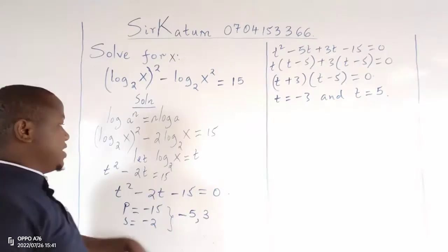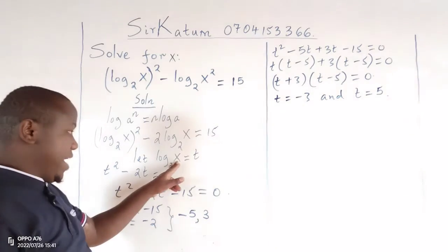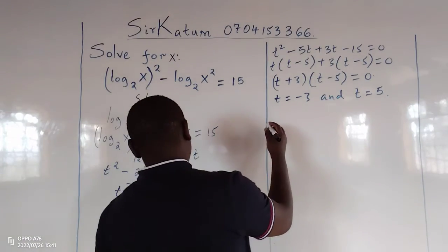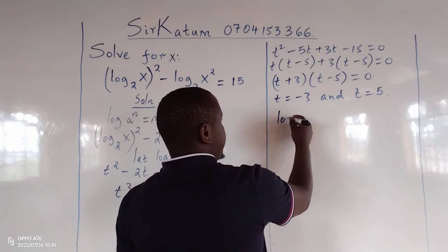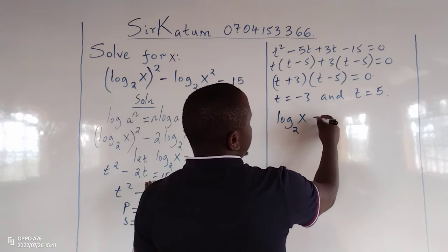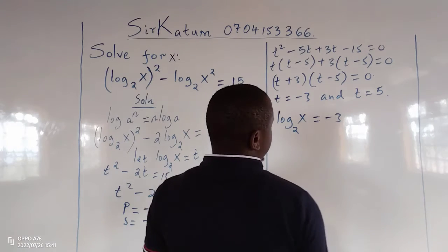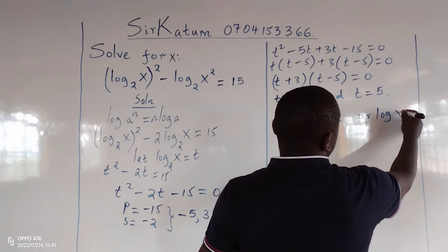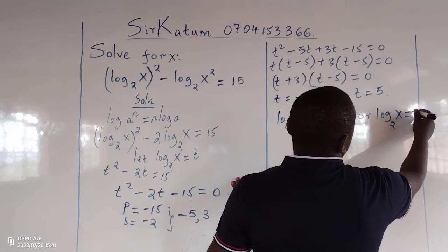But remember, it is the logarithm of x to base 2 which we had let to be t. Therefore, we can see now the logarithm of x to base 2 equals negative 3, or the logarithm of x to base 2 equals 5.